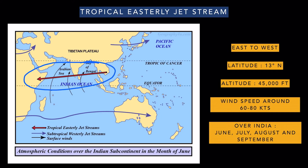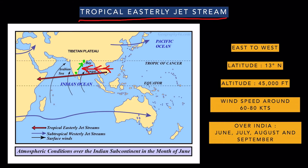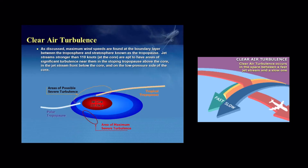So if we were to fly from Chennai to Kolkata during the monsoon, we would be experiencing easterly winds because of this tropical easterly jet stream.